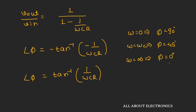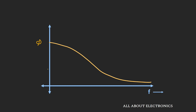At ω equal to infinity, the output signal is in phase with the input signal. Looking at the phase versus frequency curve for the high pass filter: at zero frequency, the phase is 90 degrees — the output leads the input by 90 degrees. At cutoff frequency, the phase is 45 degrees, meaning the output leads the input by 45 degrees. As we move towards higher frequencies, the output phase approaches the input phase, reaching 0 degrees at infinity.